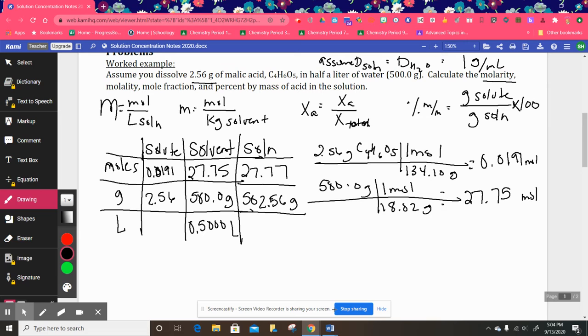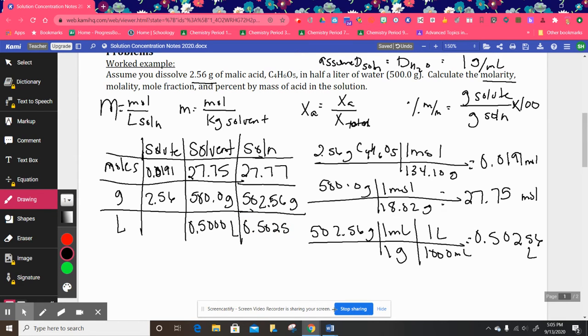So since we have a total of 502.56 grams of solution, I can set up a fence and say one gram is equal to one milliliter. And then I can say that there are 1,000 milliliters in one liter, and we get 0.50256 liters of solution. So I'll fill that in right here.